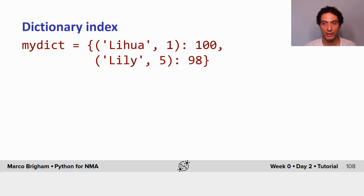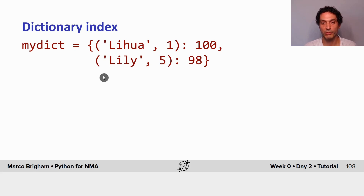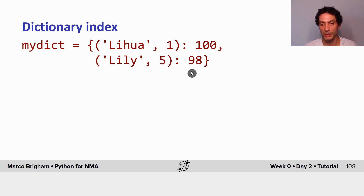Typically in scientific Python you would use this if you run a simulation with several parameters. You could use a dictionary to store the values — here would be the parameters you use to run the simulation, and here would be the outcome, say a NumPy array with the outcome.